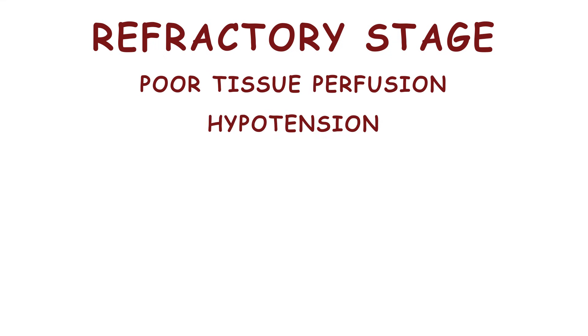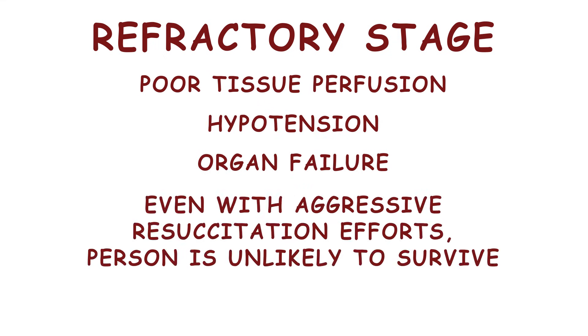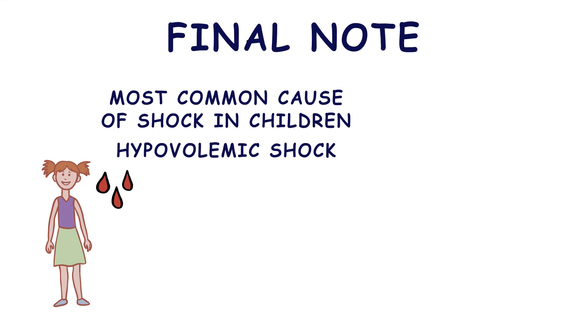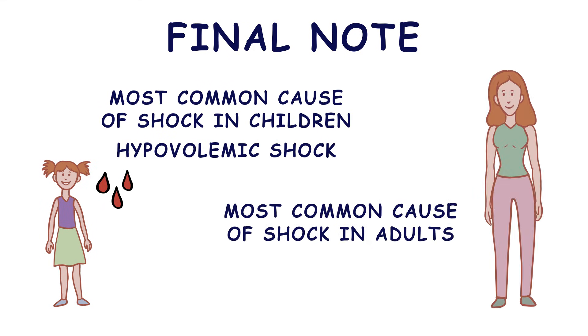The fourth and final stage of shock is the refractory stage. It is characterized by poor tissue perfusion, hypotension, and organ failure. Despite aggressive resuscitation efforts, the person is unlikely to survive. As a final note, the most common cause of shock in children is hypovolemic shock, while the most common cause in adults is septic shock.